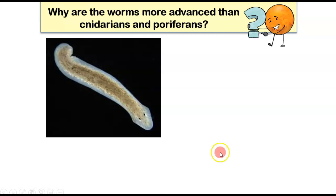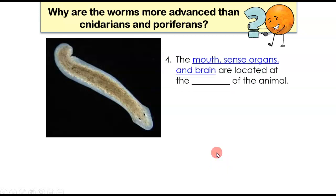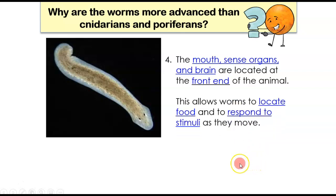Now, we saw a video on this last class. This is a planarian. This is that amazing animal that has crazy regeneration properties. And it's a flatworm. So it's the simplest of these three phyla of worms that we're getting ready to study. Now, one characteristic that all worms have, all three phyla, is that the mouth, the sense organs, the brain are located at the front end of the animal. That's something called cephalization. And I'll give you that vocabulary a little later. This allows the worm to locate food and to respond to stimuli as they move because they have all of those sense organs concentrated in one spot. And so they can kind of move that head from side to side and around and get a really good idea of where a stimuli is or to locate food.